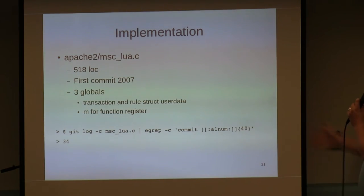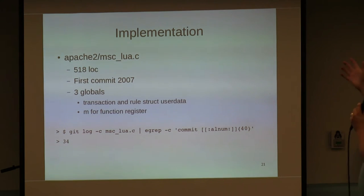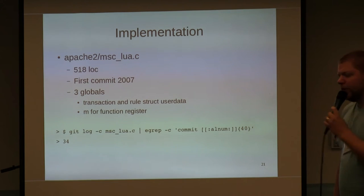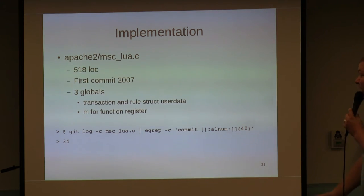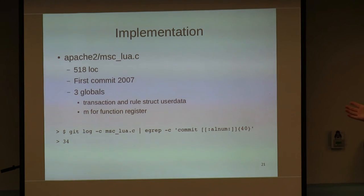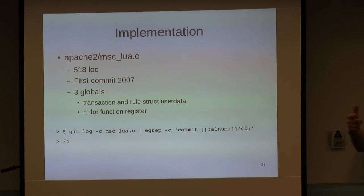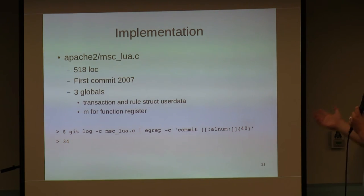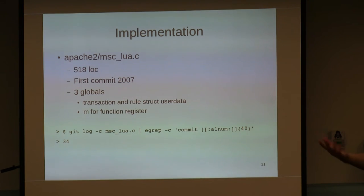Some implementation facts: the Lua integration is all done in a single file in the Apache source code — 529 lines of code. It was first done in 2007 over about 10 minutes, and most of that still remains unchanged today. It just initiates a new Lua state, pops in a couple of global variables and user data pointers, including the m global that provides all those functions. There have only been 34 commits to this, and the most recent work was just to add Lua 5.3 support — it's been essentially untouched for about five years.